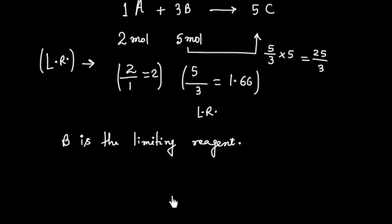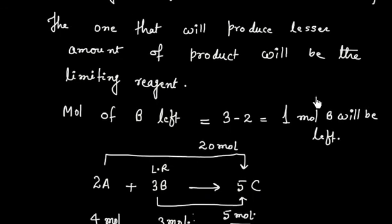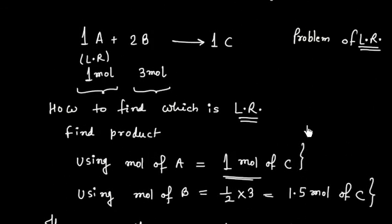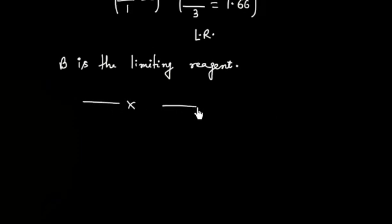To summarize: a limiting reagent problem occurs only when more than one reactant is given. Method 1: calculate moles of product from each reactant — the one giving lesser moles of product is the limiting reagent. Method 2: divide the moles of each reactant by its corresponding coefficient — the reactant with the least resulting number is the limiting reagent. We will do more problems on this in the next video.